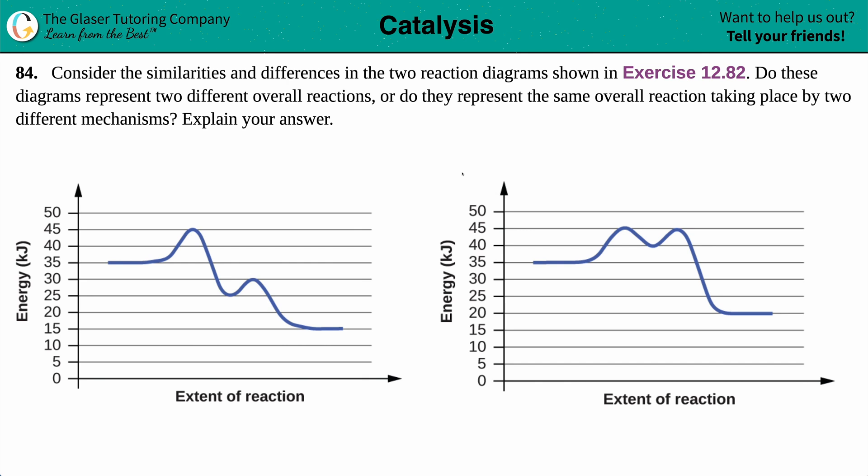Number 84. Consider the similarities and differences in the two reaction diagrams shown in exercise 12.82. Do these diagrams represent two different overall reactions, or do they represent the same overall reaction taking place by two different mechanisms? Explain your answer.